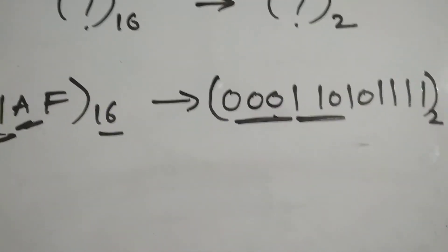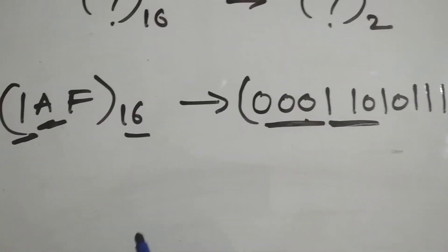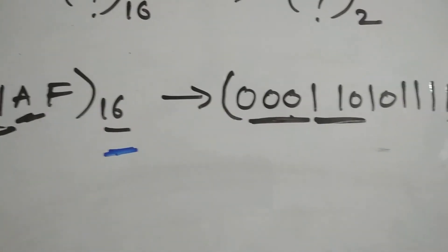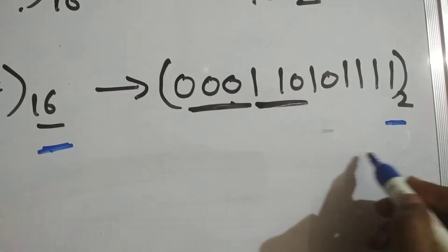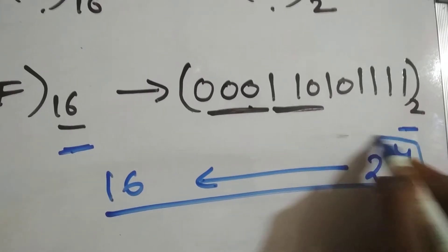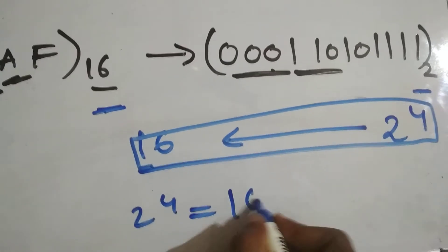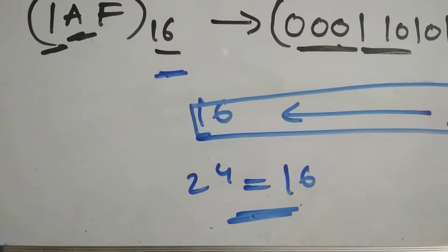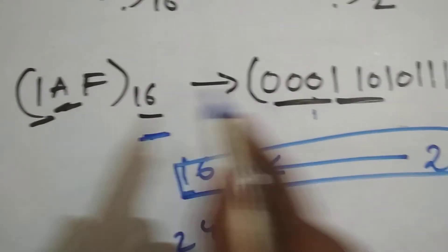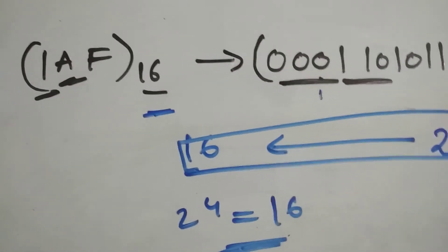The reason we are able to group 4 bits for a hexadecimal digit in binary form is that the base of the hexadecimal system, which is 16, is equal to 2 to the power of 4. That means 2^4 = 16. This is the main reason we can group 4 bits — 0001 maps to 1, and 1010 maps to A. This is why we group 4 bits in hexadecimal-to-binary conversion.